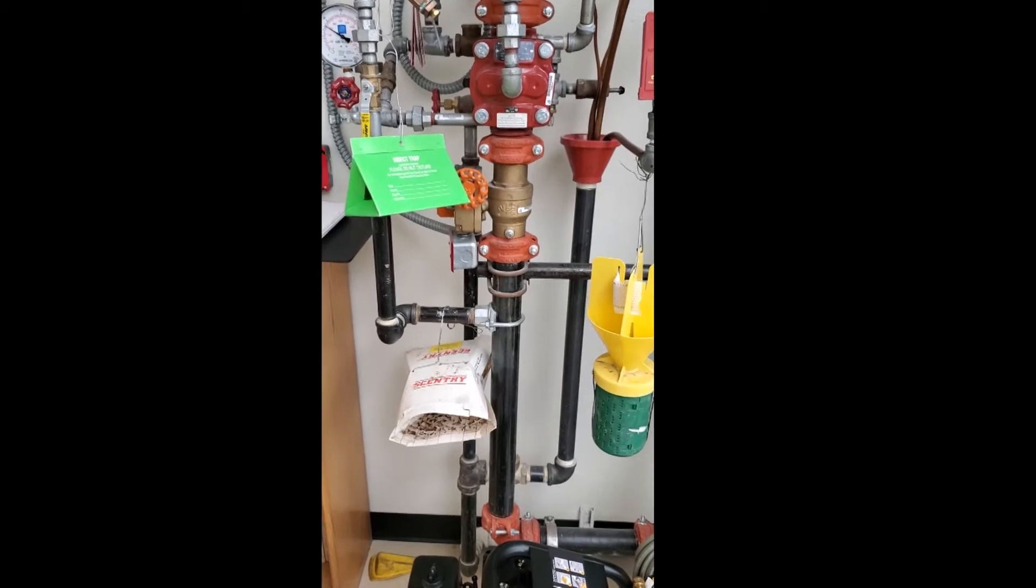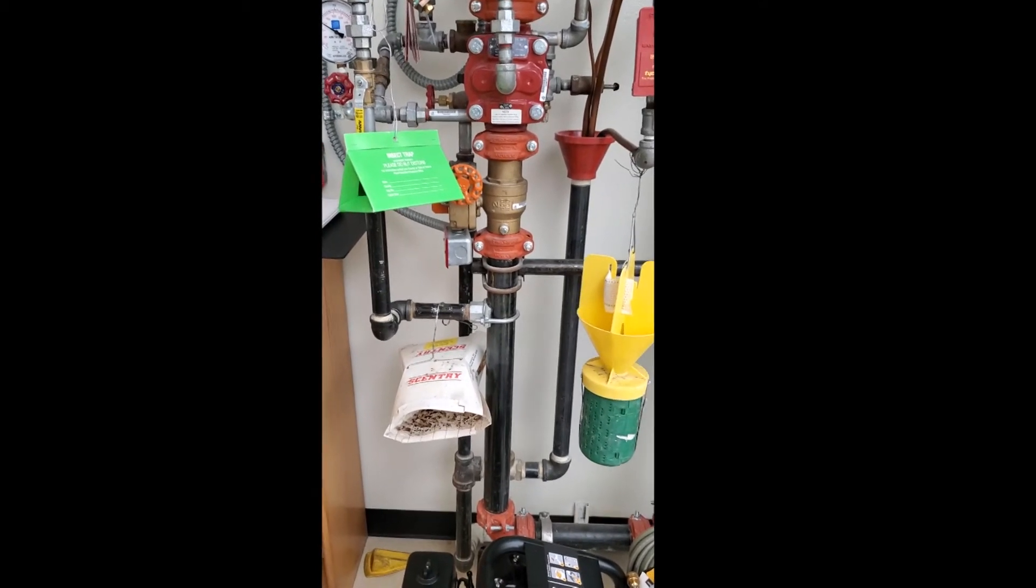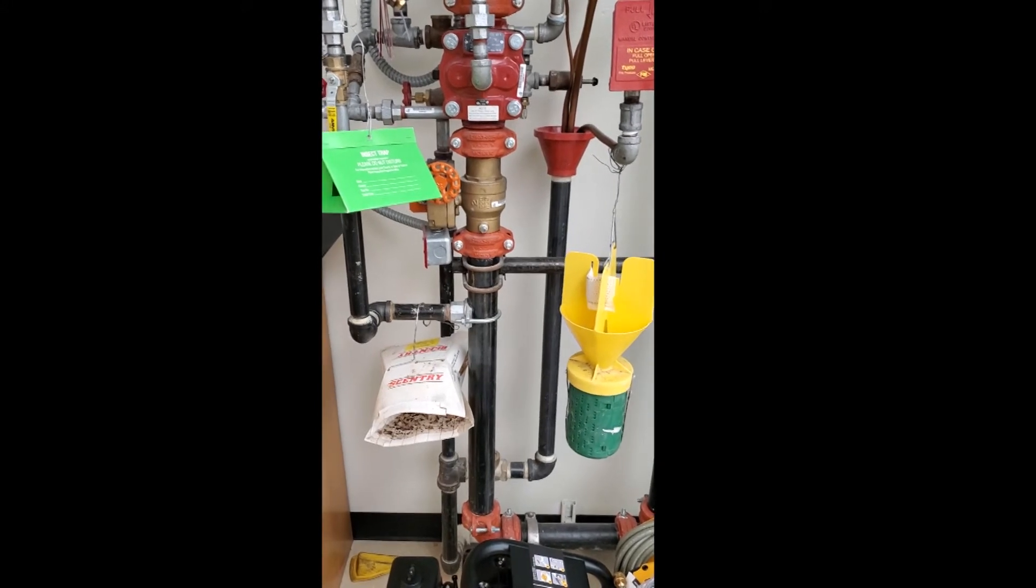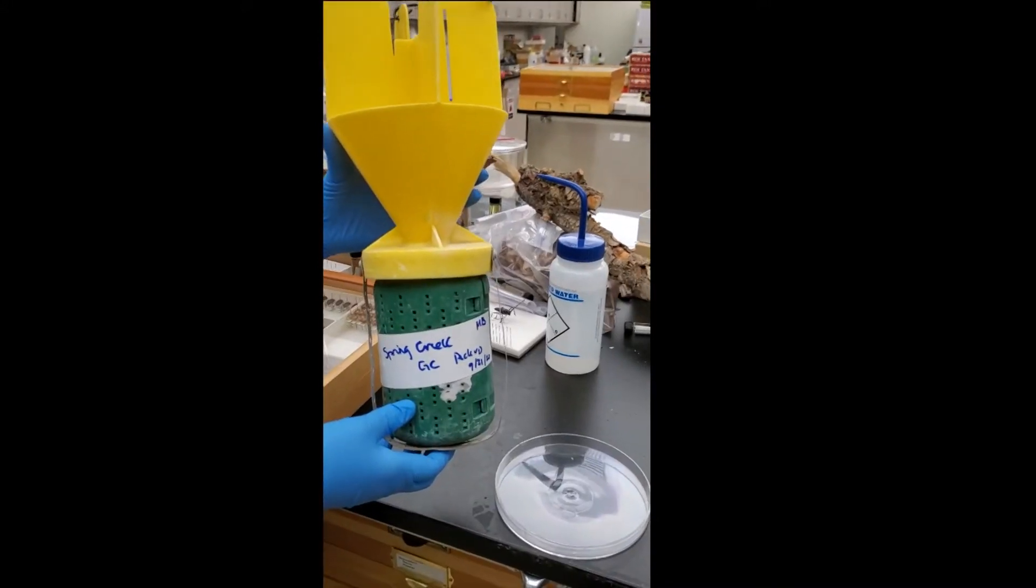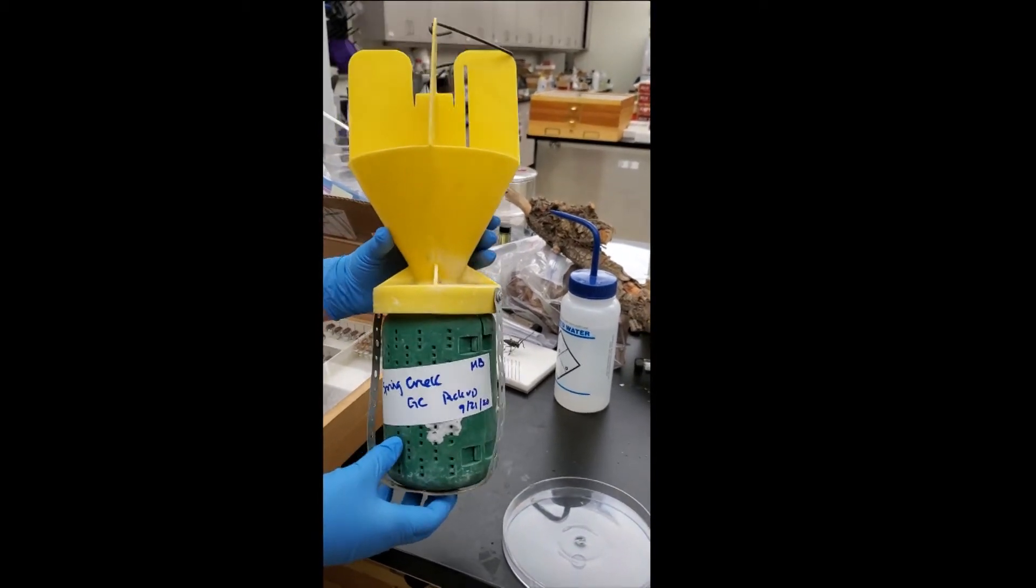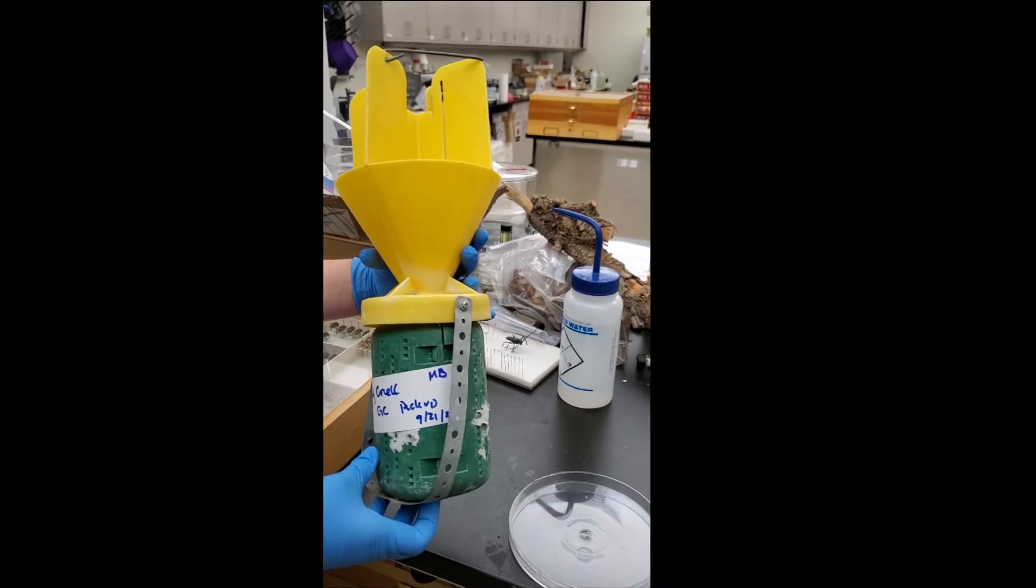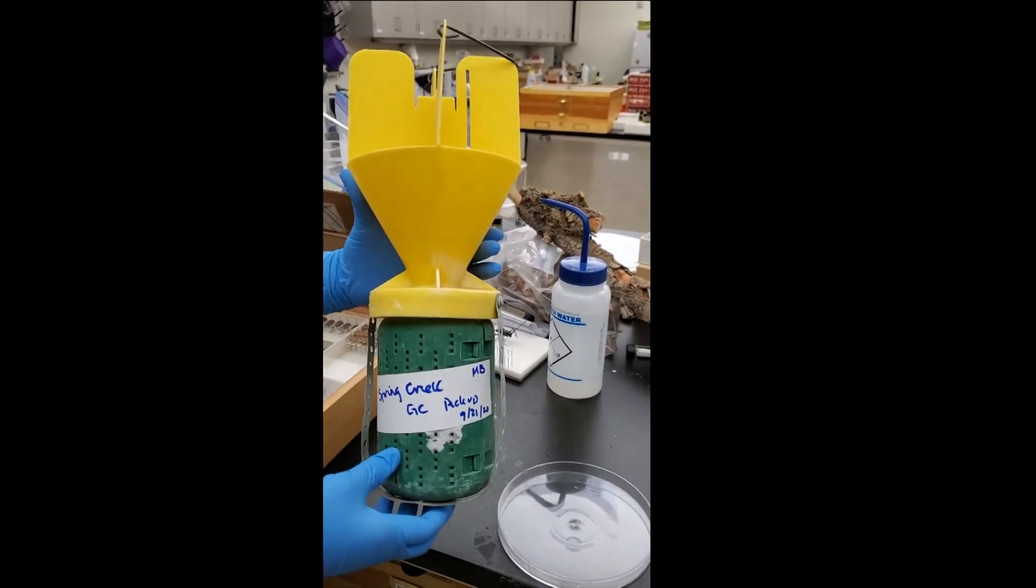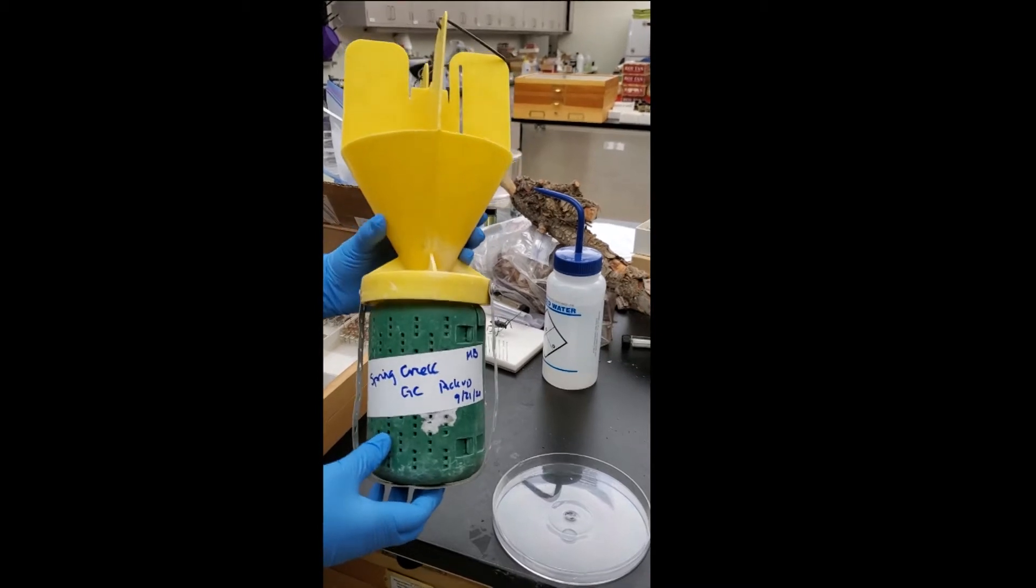We run a couple of thousand different traps around the state each year for invasive species. These are just a few of them. This is a Japanese beetle trap. We put a lot of our traps out at the beginning of the summertime and then pick them up or service them throughout the summer to see if we've caught any of the species we want.